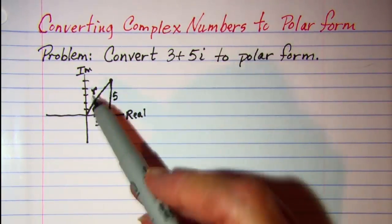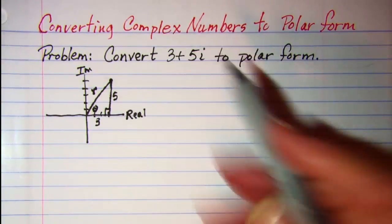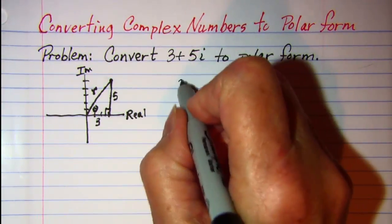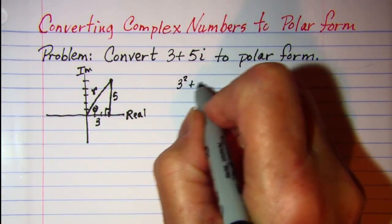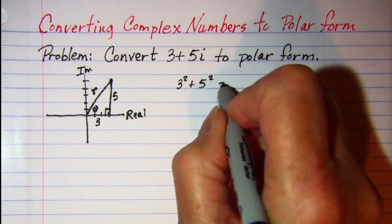So we can find r by using the Pythagorean theorem, 3 squared plus 5 squared equals r squared.